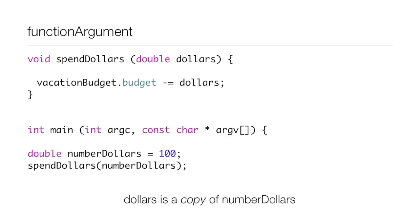Since numberDollars is 100, it would be vacationBudget.budget -= 100. So dollars is just a copy of numberDollars. Now that may have been kind of confusing a little bit,